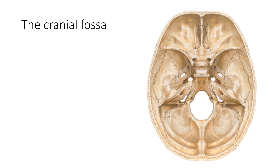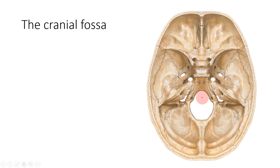Today we are going to learn about the cranial fossa. The cranial fossa is the lower part of the skull where the brain rests. It is often an intimidating topic especially in practicals, where students are asked to identify different features, bones, and foramina such as the jugular foramina. But the cranial fossa is very easy if you learn it systematically. In this video I'll introduce the cranial fossa, and in further videos I'll explain interesting points in more detail.